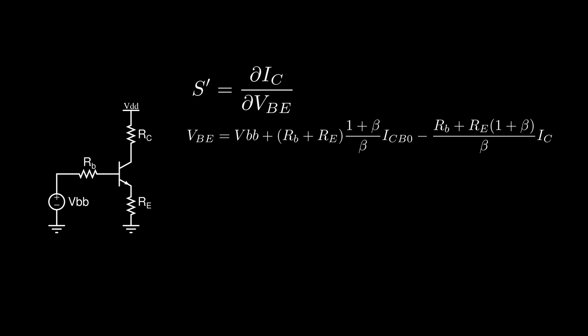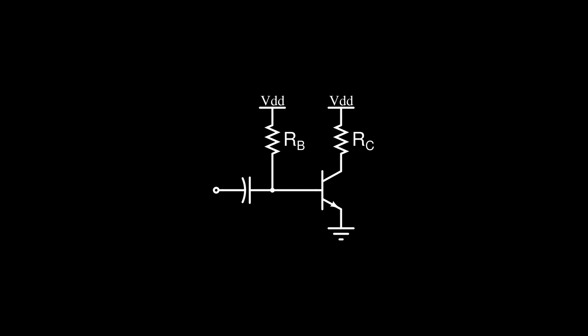And then express S prime as a function of S. This shows that by improving the stability factor S, we can also improve the stability S prime. And in a nutshell, that's why you should never use a fixed bias network.